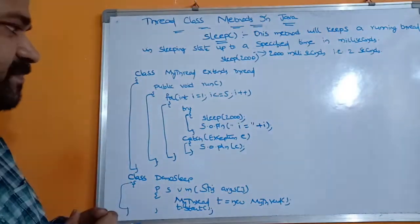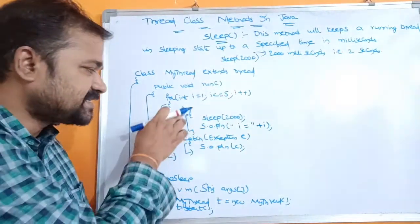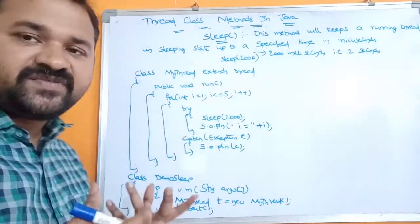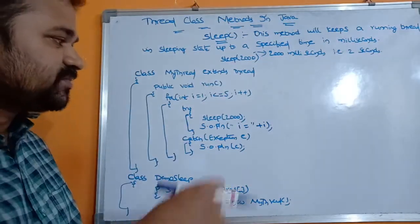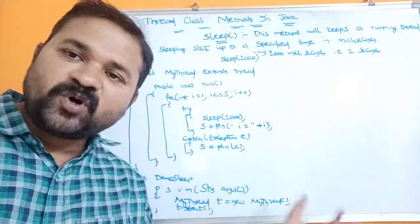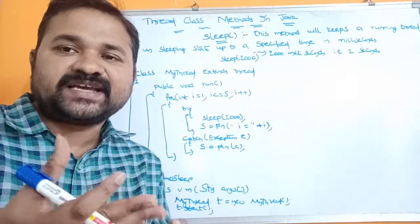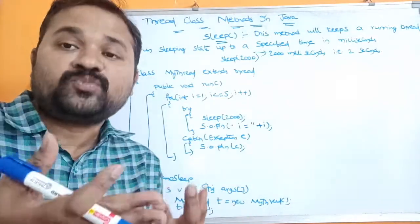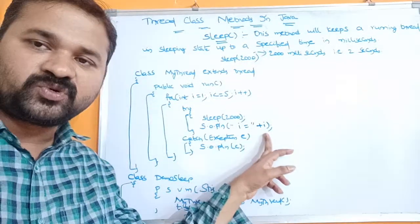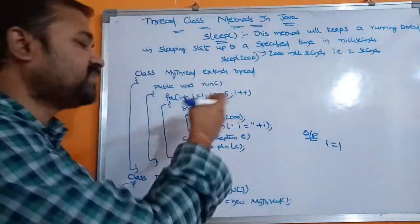The CPU starts executing the run method. For i = 1, the condition 1 <= 5 is true, so the try block executes sleep(2000). For two seconds the thread will be in sleeping state, so we don't get any output during that time. Once those two seconds expire, the next line executes — System.out.println — printing i = 1. Since there's no exception, the catch block won't execute.